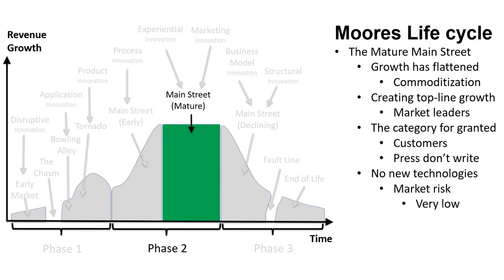Stage 6: The Mature Main Street. Category growth has flattened and commoditization is increasing. Market leaders are creating top-line growth by streamlining organically and through mergers and acquisitions — the big players buy the smaller ones. Customers now take the category for granted, and the press no longer writes about it. On the plus side, however, there are no new technologies on the horizon, so the market risk is very low.